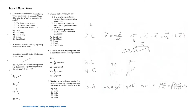Delta v equals v2 minus v1, which is v2 plus minus v1. So this is v2, and this is minus v1 — the same vector but in the opposite direction. The sum of v2 plus minus v1 gives delta v, which is the direction of the average acceleration. So the answer is C.